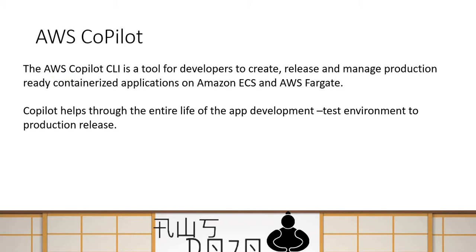AWS Copilot is a CLI-based tool. You run this tool using the command line interface, and it can help you manage the entire lifecycle of your application — all the way from creating your application, to deploying it to a test environment, deploying to the production environment, and then updating your releases. All those lifecycles of the application can be managed through AWS Copilot.